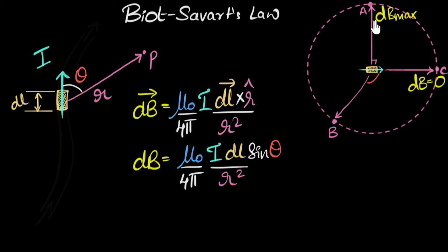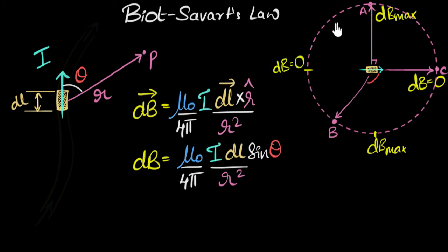When you are at 90 degrees — whether here or there — you get maximum field. At 0 degrees or 180 degrees (along the axis of the current element), sine equals zero so you get zero field. In between, the magnetic field is between the maximum and minimum values. Magnetic field is always maximum perpendicular to the current element and minimum on the axis of the current element.